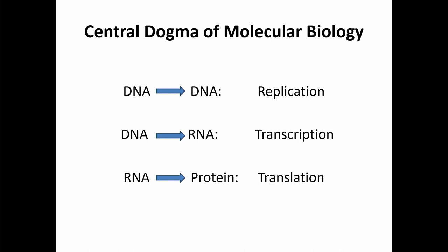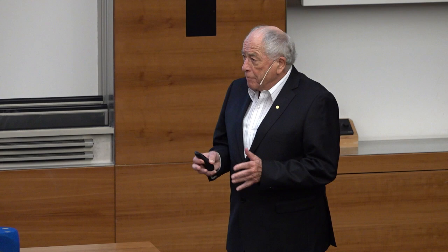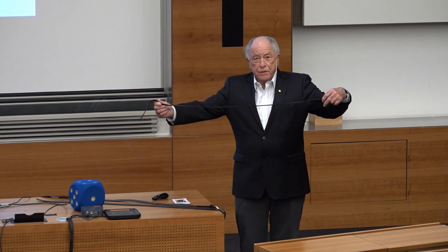It is a basic law of molecular biology that these linear molecules can be copied. DNA can be copied onto DNA — so-called replication. DNA can be copied to RNA in transcription, and RNA can be translated into protein. Why 'translation'? Because here we transfer from an alphabet of four building blocks to an alphabet of 20 building blocks. The important point is that the nucleic acids are linear chains read in a predetermined direction, and the same is true for proteins.